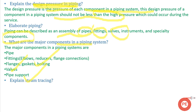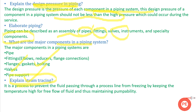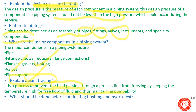Next question: explain steam tracing. Steam tracing is generally done where temperature is an issue. It is a process to prevent the fluid passing through a process line from freezing by keeping temperature high, thus maintaining pumpability. For example, where a fluid like coal tar can freeze due to temperature drop, steam provides heat to keep it in liquid form.